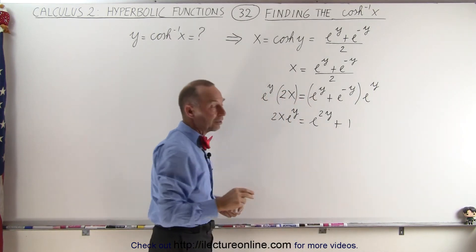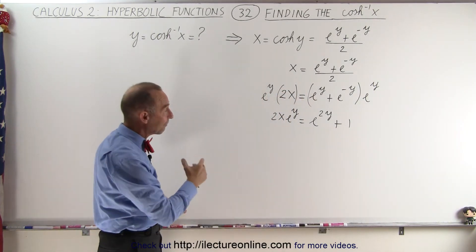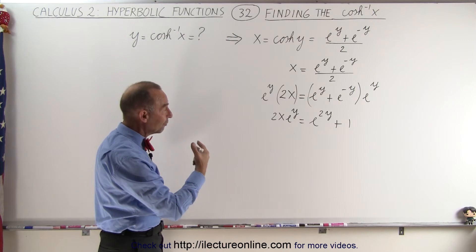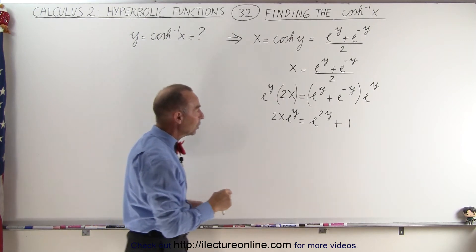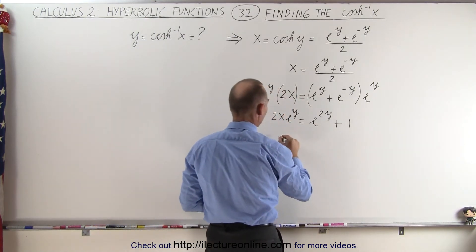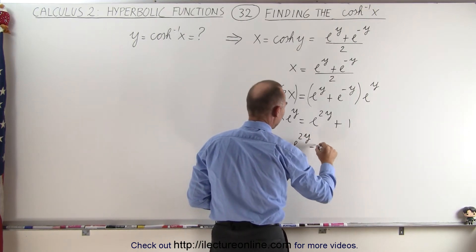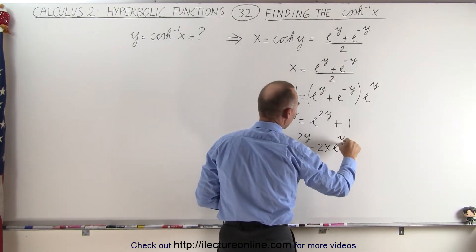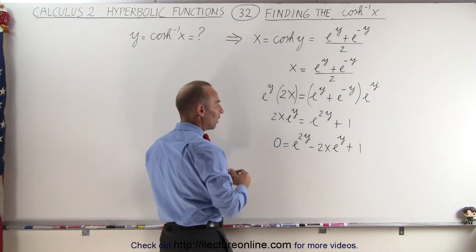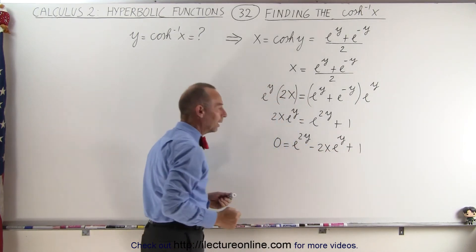And now we realize, if we look closely, that we actually have a quadratic equation of e to the y. So we're going to rewrite this, move this to the left side, we end up with 0 equals e to the 2y minus 2x e to the y plus 1, and sure enough, there's our quadratic equation of e to the 2y.